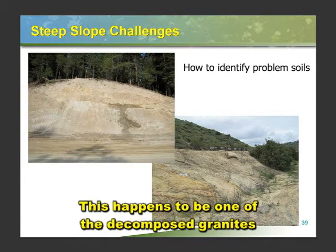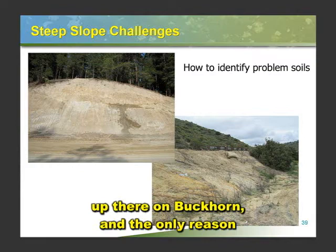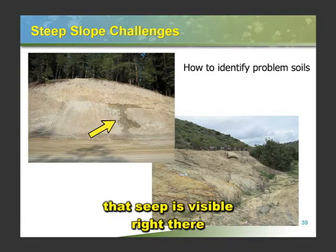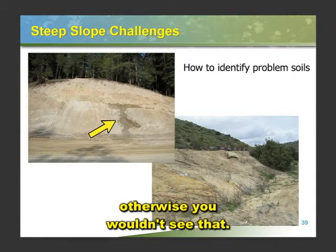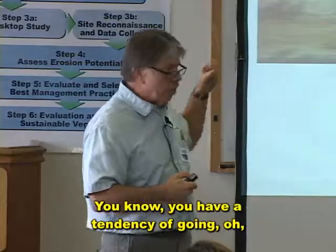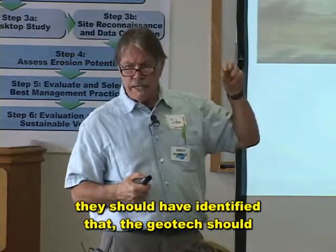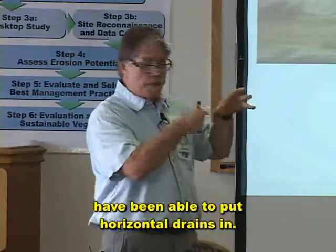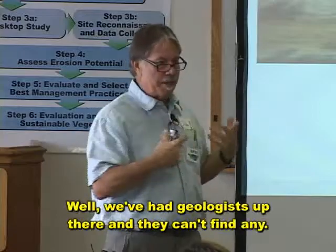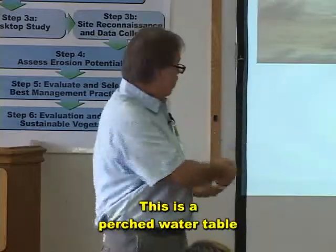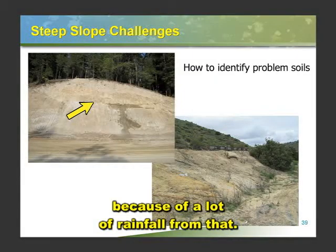This happens to be one of the decomposed granites up there on Buckhorn. The only reason that seep is visible right there is because we had three really wet years; otherwise you wouldn't see that. You have a tendency of going, oh, the geotech should have been able to put horizontal drains in. Well, we've had geologists up there and they can't find any. This is a perched water table because of a lot of rainfall.